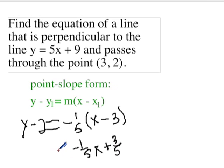And on the other side, we've got our y minus 2, so I'm going to add 2 to both sides. So we get y equals negative 1 fifth x plus 2 and 3 fifths.